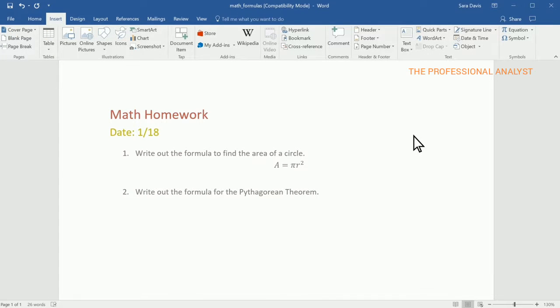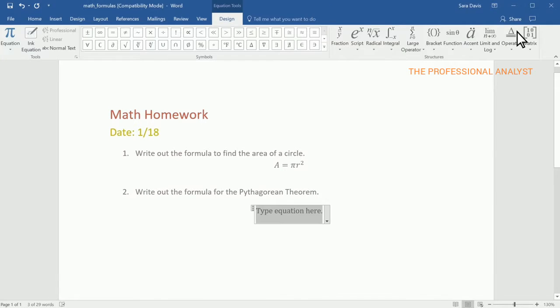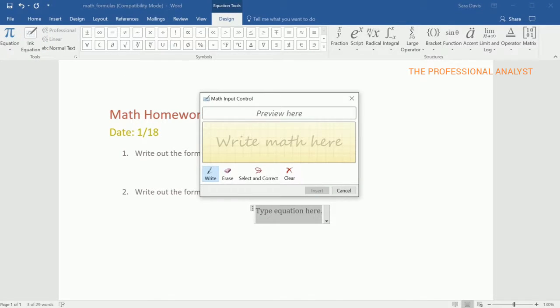To write one out, select Equation and then select Ink Equation. On a touchscreen device, use your finger or a stylus to write an equation. Otherwise, use your mouse to write one. We'll do that now in our file.